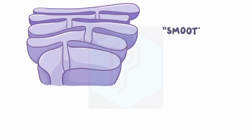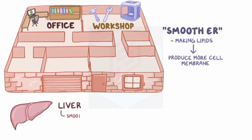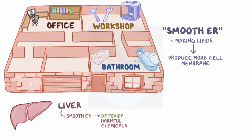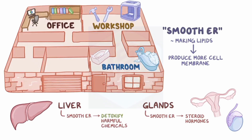There is also a smooth type of endoplasmic reticulum, which is involved in making lipids like cholesterol and phospholipids, and the cell can use this for producing more cell membrane. In some cells, like the liver, the smooth endoplasmic reticulum helps with detoxifying harmful chemicals, so in this case kind of like a spa or bathroom in the apartment. In other cells, like glands, the smooth endoplasmic reticulum uses cholesterol to go on to create various steroid hormones. For this reason, some specialized hormone-producing cells, like the ones found in the testes or the ovaries, have lots of smooth endoplasmic reticulum.